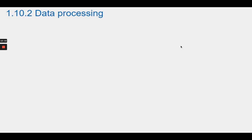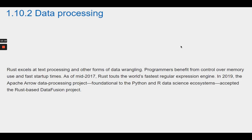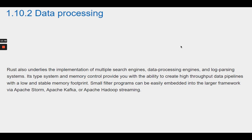Section 1.10.2 Data Processing. Rust excels at text processing and other forms of data wrangling. Programmers benefit from control over memory use and fast startup times. As of mid-2017, Rust touts the world's fastest regular expression engine. In 2019, the Apache Arrow Data Processing Project, foundational to the Python and R data science ecosystems, accepted the Rust-based DataFusion project. Rust also underlies multiple search engines, data processing engines, and log parsing systems. Its type system and memory control provide high-throughput data pipelines with a low and stable memory footprint. Small filter programs can be embedded into larger frameworks via Apache Storm, Apache Kafka, or Apache Hadoop streaming.